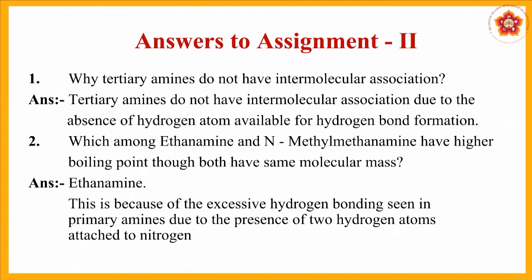The boiling point comparison depends on the type of amine — primary, secondary, or tertiary. Ethanamine is a primary amine and N-methyl methanamine is a secondary amine. For secondary amines, hydrogen bonding is minimal, whereas for primary amines it is maximum due to multiple acidic hydrogens available for extensive hydrogen bonding. Therefore, the primary amine — ethanamine — has a larger boiling point.